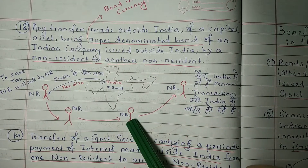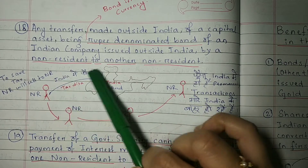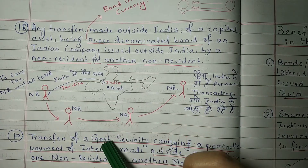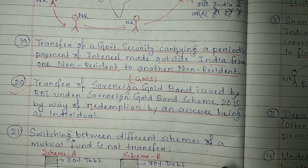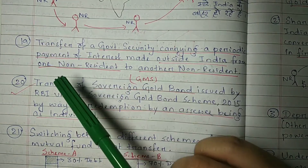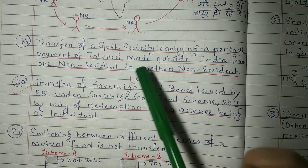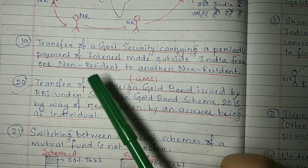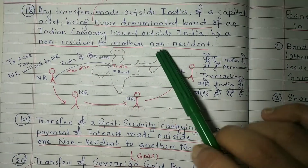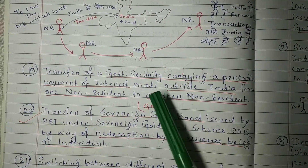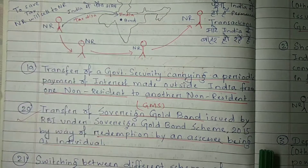All those transactions are in India and the money that came into India stays in India, so this is why this provision was made. Next is point number 19: transfer of a government security carrying a periodic payment of interest, made outside India from one non-resident to another non-resident. This is the same concept — just here it was a rupee denominated bond, and in this case it is a government security carrying a periodic payment of interest.